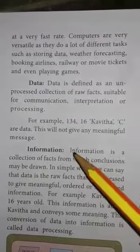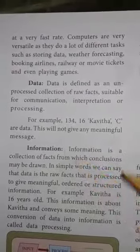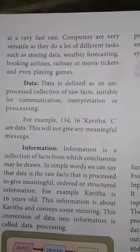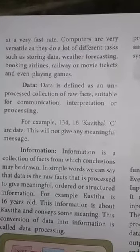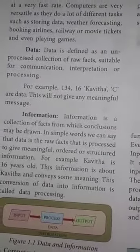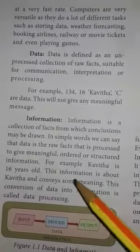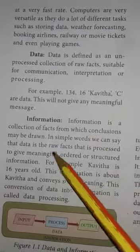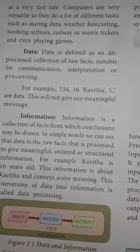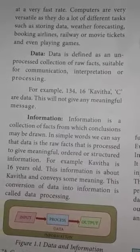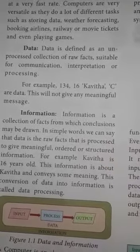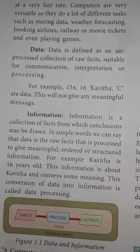For example, '134, 60, Kavitha' — that is data. There is no complete expression or meaning from that data alone. When we gather all information from data, we get a complete picture. Information is a collection of facts taken from data, and every piece of data is part of an information from which a conclusion may be drawn. If we get the data, we derive complete information from it.